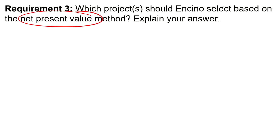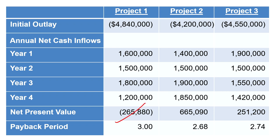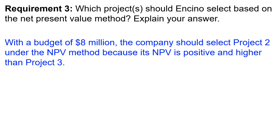Requirement three asks us to do the same thing based on net present value. We already eliminated project one very early — it does not have a positive net present value. Looking at projects two and three, project two has a significantly higher net present value than project three. With a budget of eight million dollars, the company should select project two under the net present value method because its net present value is positive and higher than project three's.